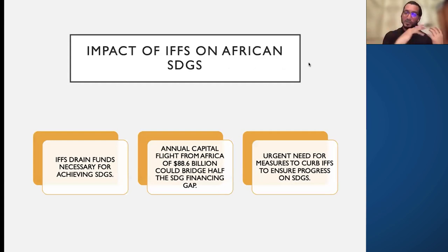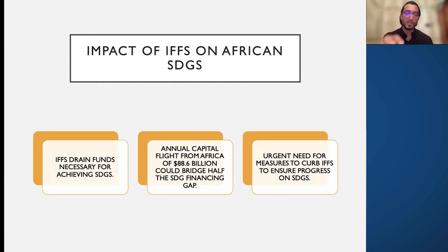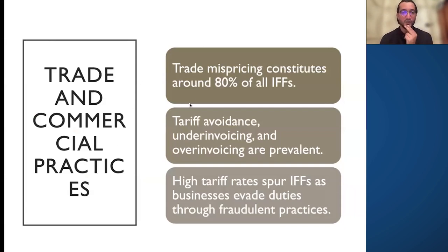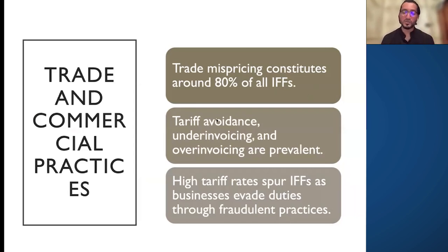The focus on African countries is because the research team, working with Professor Fidel Karbub, concentrates on the African region where extensive data is available. IFF drains funds necessary for achieving the SDGs. In Africa alone, the latest figures show $88.6 billion flowing out, creating an urgent need for measures to curb IFF to ensure progress on SDGs. Trade mispricing — under-invoicing or over-invoicing of trade — is another method used to move IFF across borders.